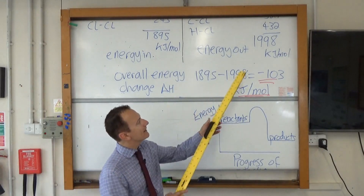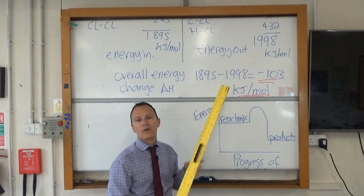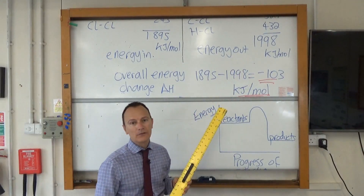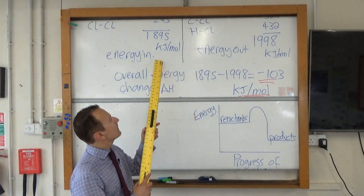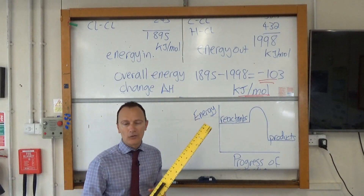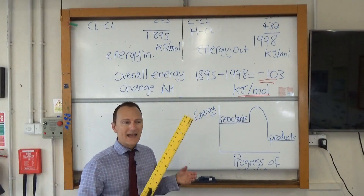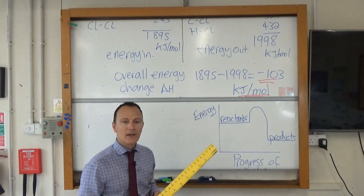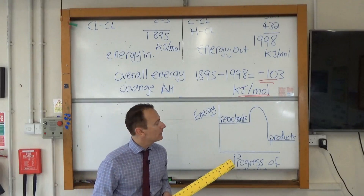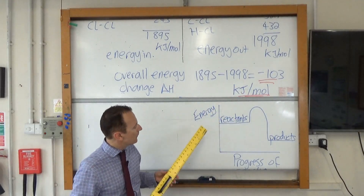The answer is: we're getting more energy out from making new bonds than the amount of energy we put in to break the old bonds, so overall it's energy out. And that also ties this negative number in with the reaction profile of an exothermic reaction.